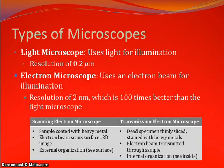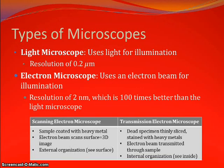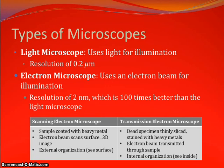There are two main types of microscopes. The first is a light microscope, which uses light for illumination and has a resolution of 0.2 micrometers. The second type is an electron microscope, which uses an electron beam for illumination and has a resolution of up to 2 nanometers, which is nearly 100 times stronger than the light microscope.